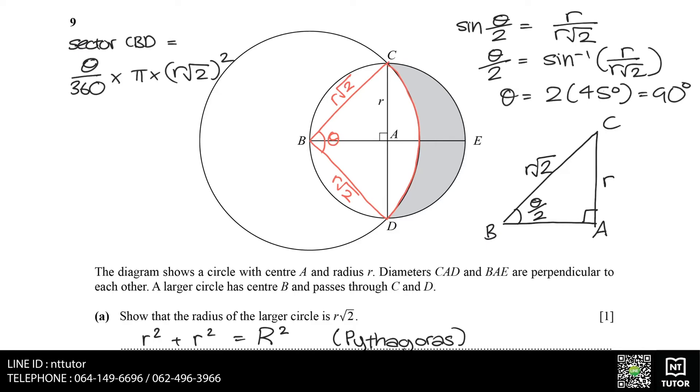Some of you may have noticed that triangle ABC is also in the format 1, 1, root 2, so the angle ABC or theta divided by 2 should be equal to 45 degrees. Now that we know the value of theta, we can now find the area of sector CBD in terms of R.